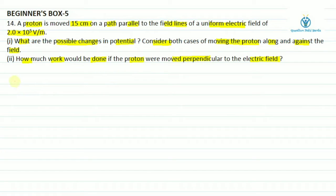So distance kitna chalana hai humme 15 centimeter yani 0.15 meter. Electric field ka strength diya hai 2 into 10 raise to power 5 volt per meter aur jis charge ko humme leke jana hai us charge ka value hai e ke barabar yani proton.